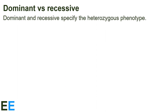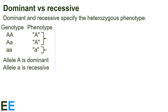Let's look at this whole dominant and recessive scenario in a more abstract and general way. Remember that the key thing is that dominant and recessive specify the heterozygous phenotype. Showing three genotypes for the capital A and lowercase a alleles where capital A is dominant and lowercase a is recessive, the AA and Aa genotypes result in the capital A phenotype, whereas the aa homozygotes have the lowercase a phenotype. This is the same scenario as the pea plants, if capital A symbolizes the tall allele and lowercase a symbolizes the short allele.